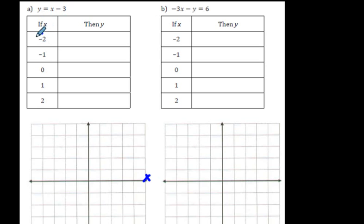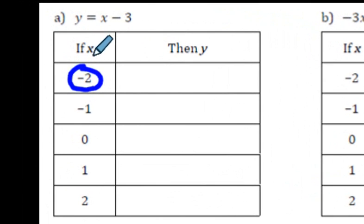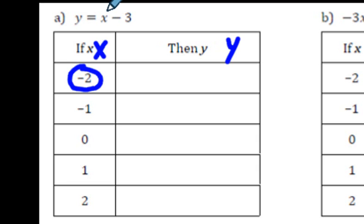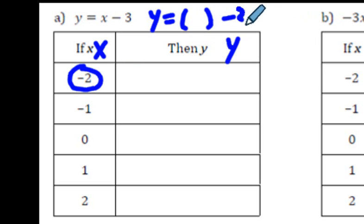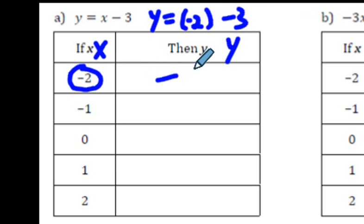We're taking this negative 2 — these are the x values over here — and we're putting it right where you see the x. You could put a bracket instead of x and put the negative 2 right there. What is negative 2 minus 3? Your answer will be negative 5. So if x is negative 2, then y is negative 5.